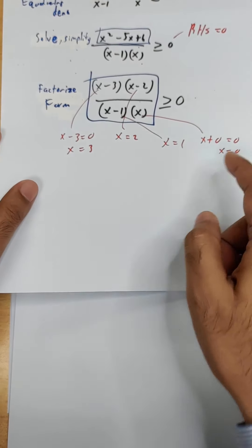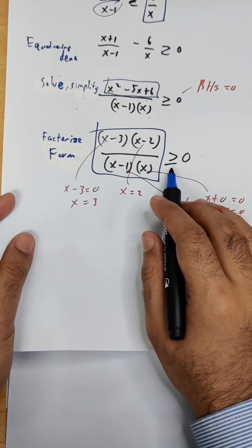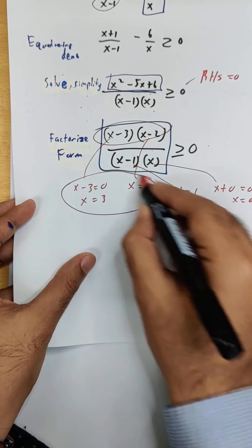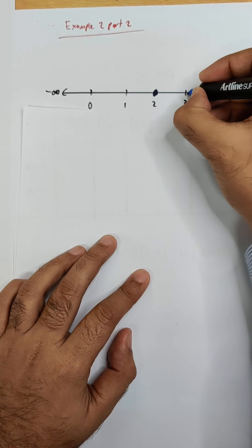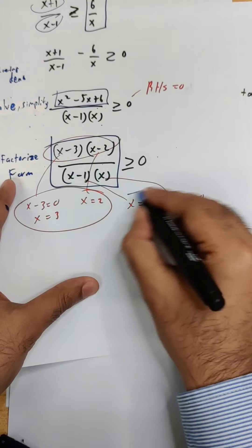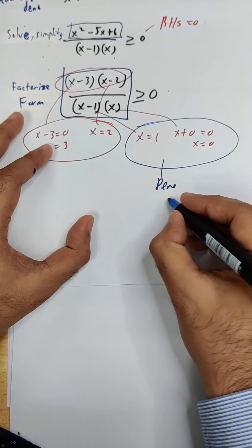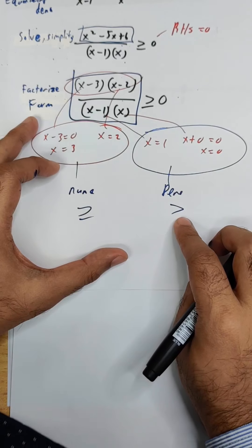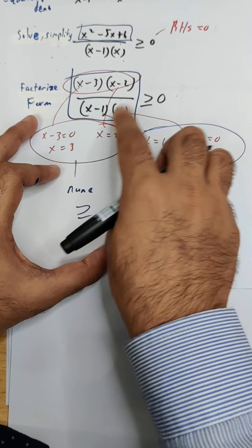Now for part two, place all values — 3, 2, 1, 0 — on the number line. Since this inequality has 'greater than or equal to', there's an equal sign. For the numerator factors you can use a closed bracket, so 3 and 2 get filled dots. But for the denominator factors 1 and 0, you cannot include equality because that would mean dividing by zero, so those remain open brackets.